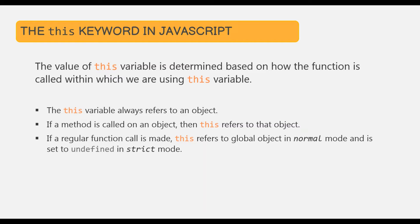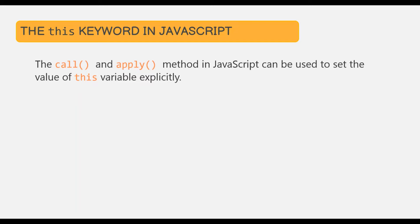So far we have seen that the value of `this` is set automatically during runtime based on how the method is called. But it is also possible to set the value of `this` explicitly to any other object. The call and apply methods in JavaScript can be used to set the value of `this` explicitly. Let's understand this with an example.